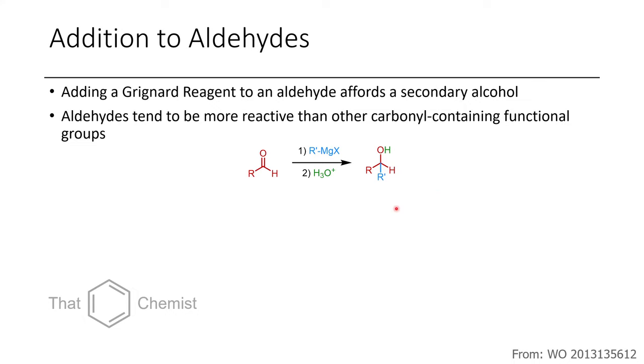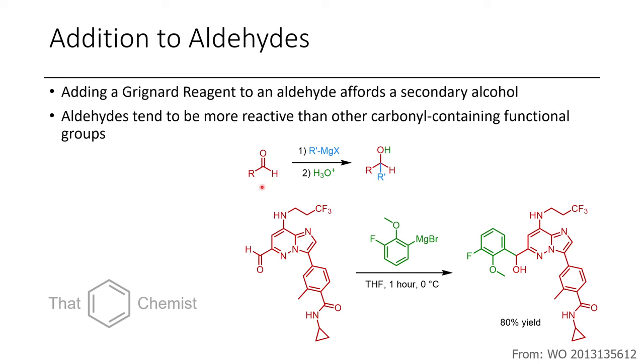So first, we'll talk about aldehydes. Aldehydes tend to be the most electrophilic electrophile for Grignard reagents to add to. So in the presence of multiple different electrophilic carbonyl-containing groups, aldehydes will preferentially react first most of the time. And so one example from a patent that I found was this complex aldehyde here reacts with this aryl Grignard reagent, forming this secondary alcohol product.